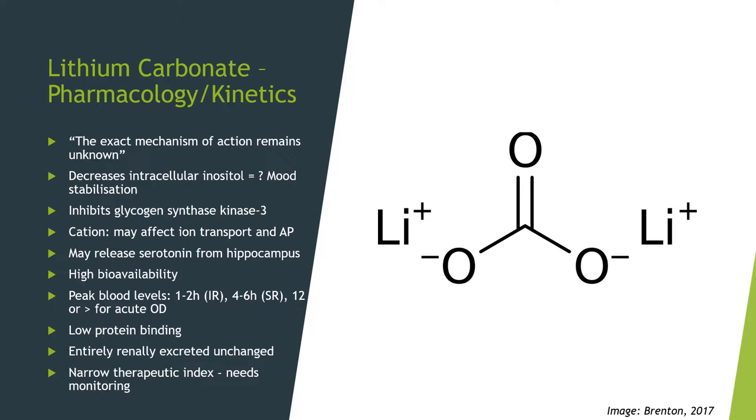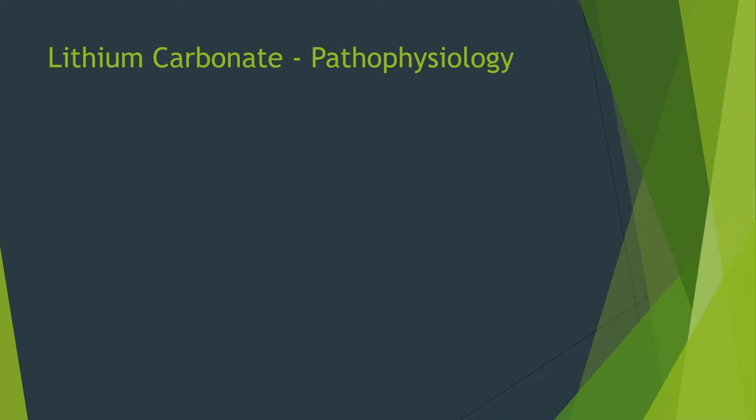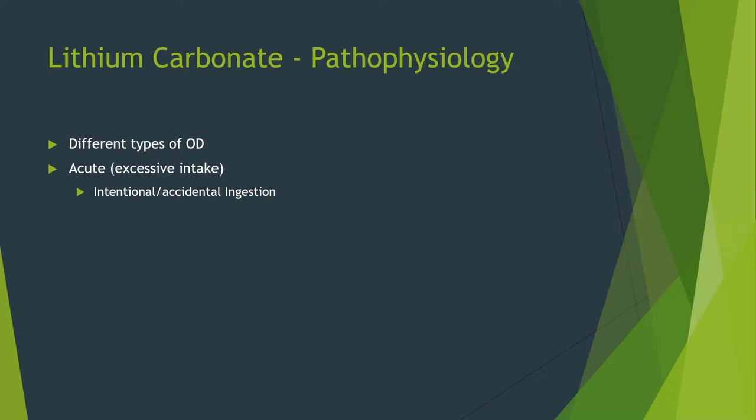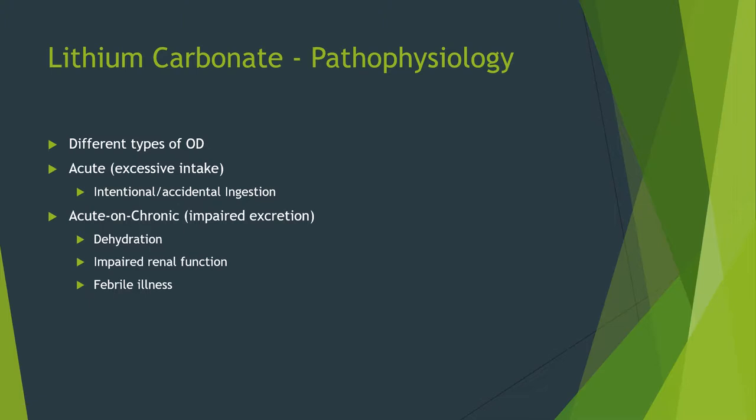There are different types of overdose. Acute or excessive intake can be intentional or accidental — signs of overdose are usually seen from 10 to 15 sustained-release tablets. Alternatively, an acute-on-chronic overdose is usually related to impaired excretion, seen in patients who can't clear lithium adequately. This is especially common in elderly people with a decreased glomerular filtration rate, but anything impacting renal function — such as dehydration or febrile illness — can cause an acute-on-chronic overdose.